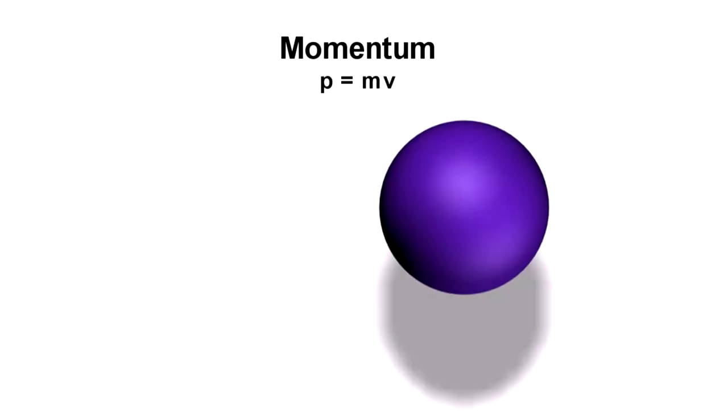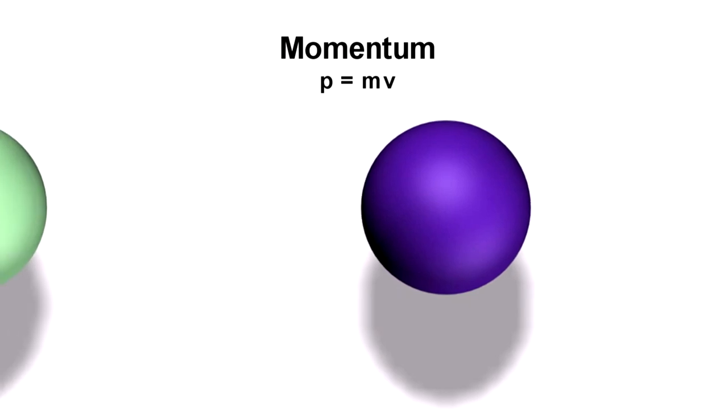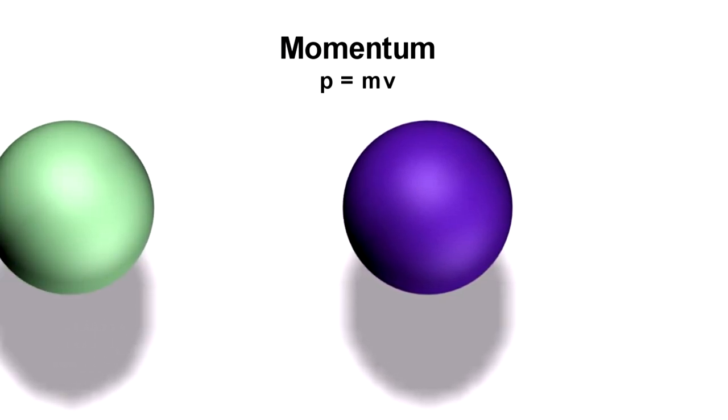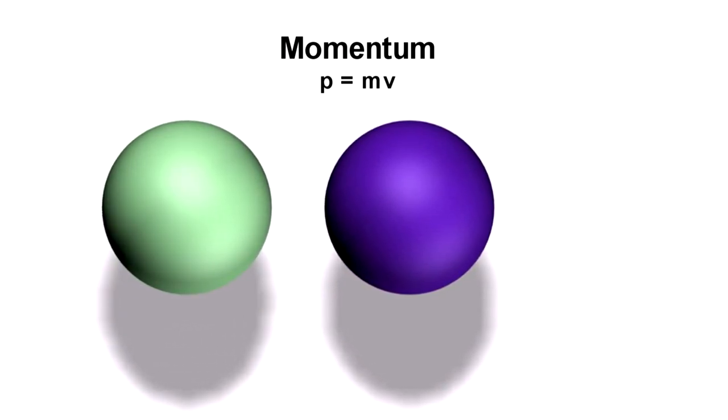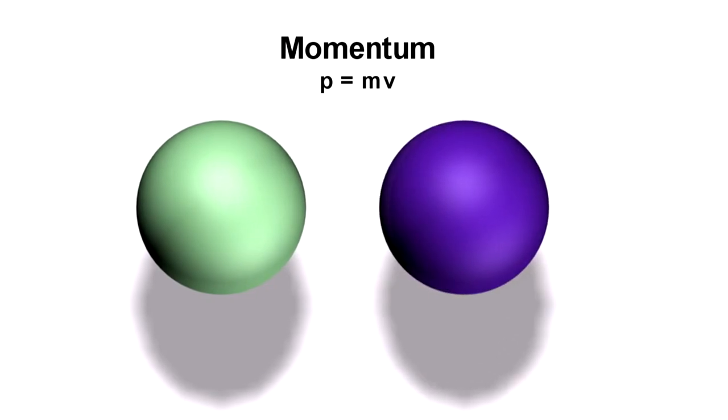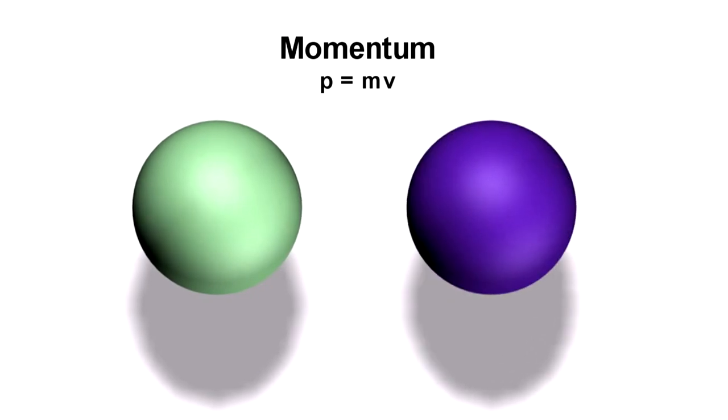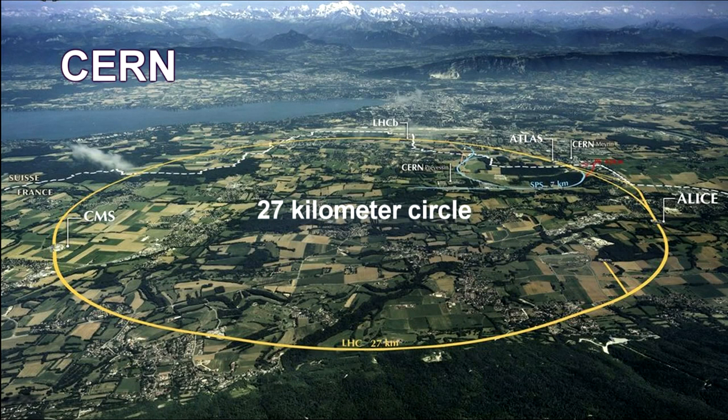You'll recall from our segment on the Microscopic in the How Small Is It video book that momentum is mass times velocity. Another interesting consequence of the speed of light being a constant for all observers is that the momentum of an object increases without bound as its velocity approaches the speed of light. This increases the amount of energy it takes to increase its speed even more.